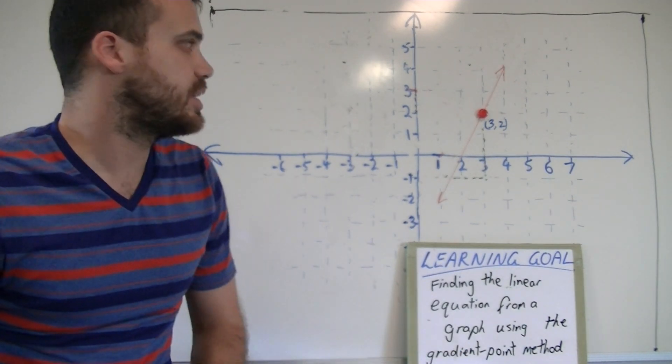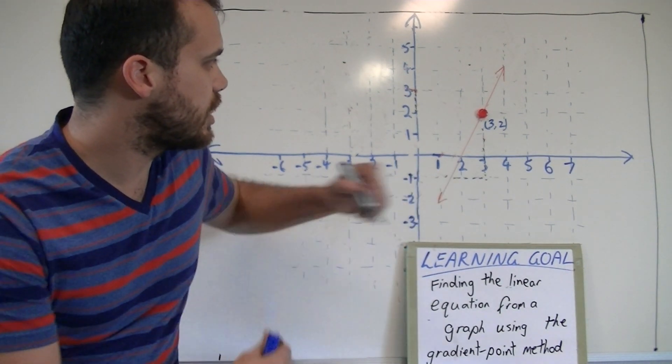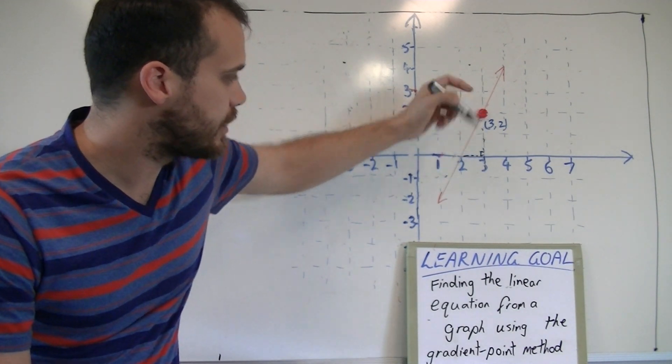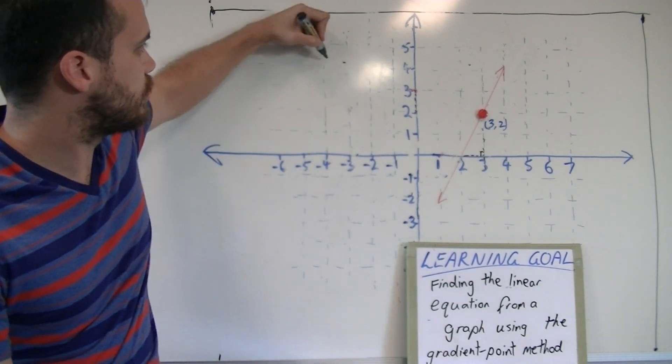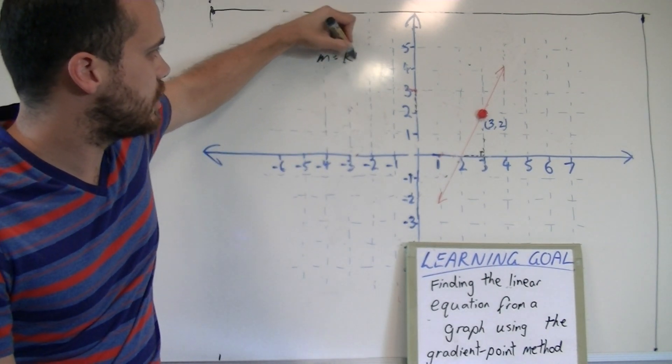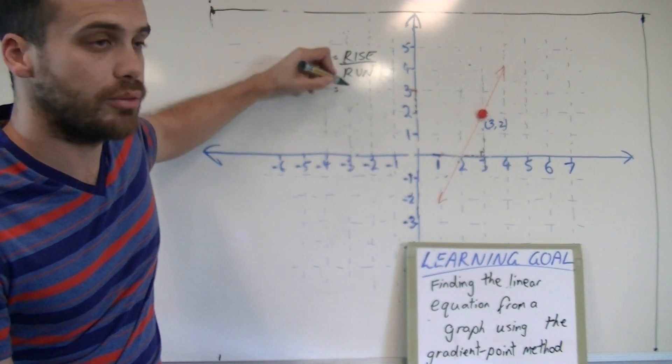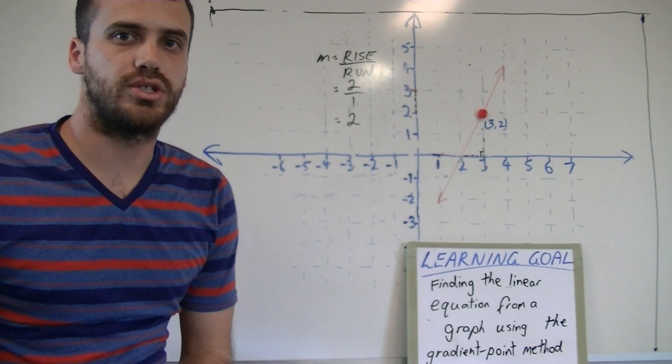You still need to know the gradient here, so that's our first step. Now you can see that the gradient for this particular one, if I use rise over run, it rises 2 for every 1 that it goes across. So if my gradient is m equals rise over run, my rise is 2, my run is 1, so my gradient is just 2.